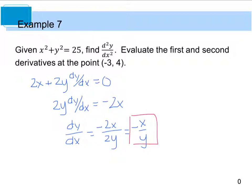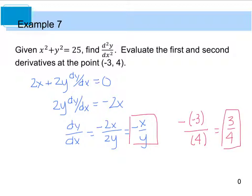Let's go ahead and evaluate the first derivative at the point negative 3, 4. We plug in negative 3 for x and divide by 4. A negative times a negative gives us a positive, and we end up with 3/4. So 3/4 is the first derivative evaluated at our coordinate point.